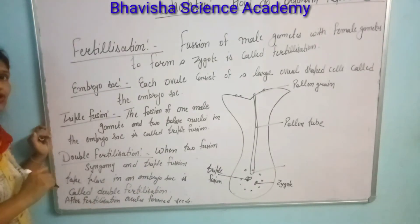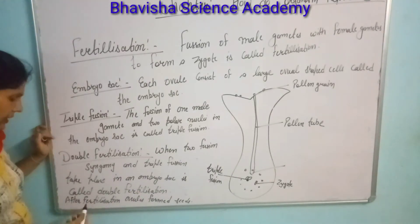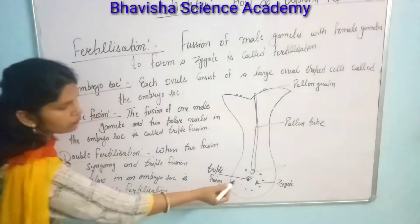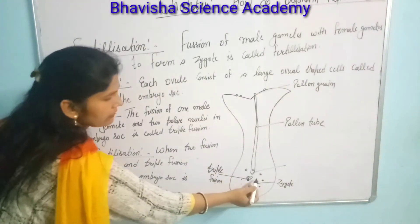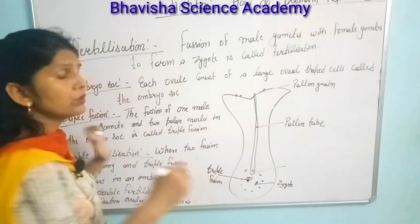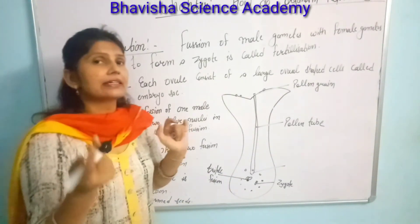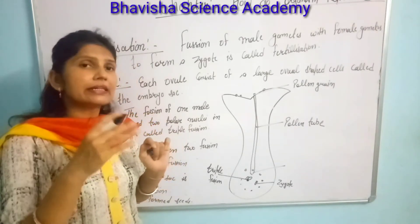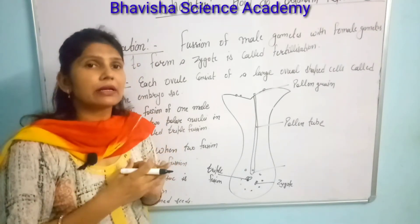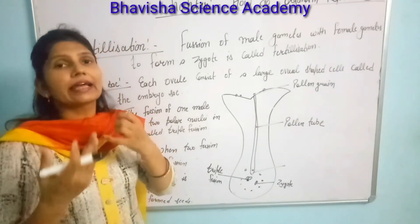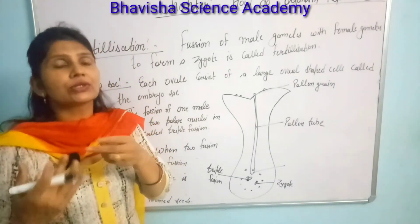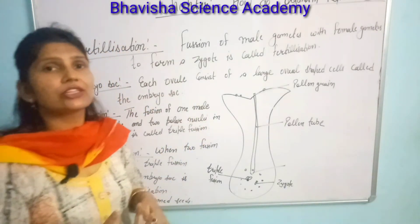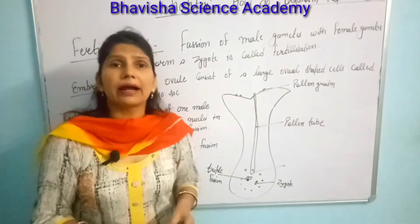After fertilization, the ovules convert into seeds. Seeds are the initial stage of a plant. Given favorable conditions, seeds change into a new plant. That completes the process of fertilization in plants.